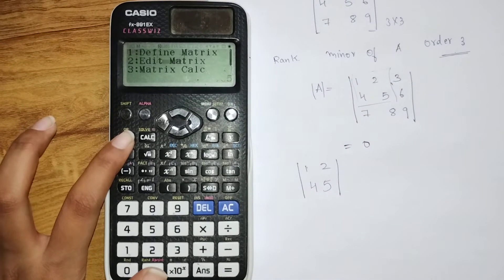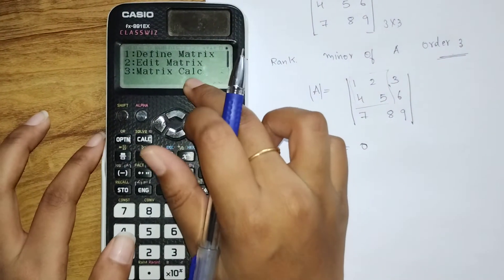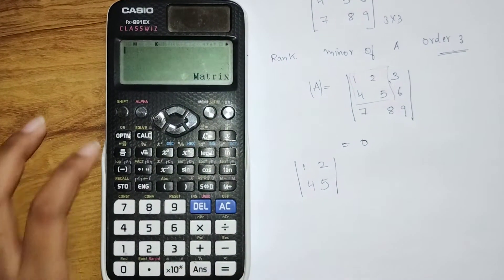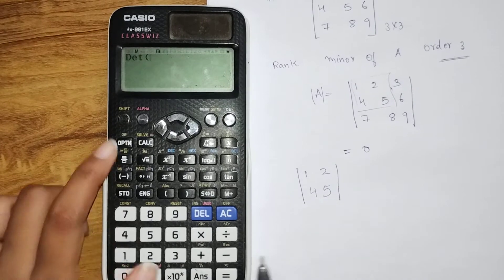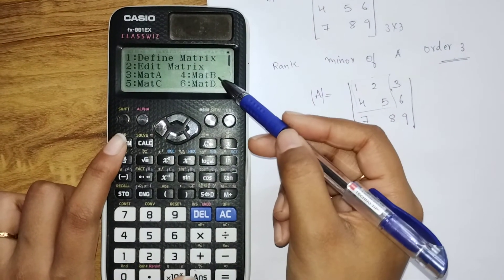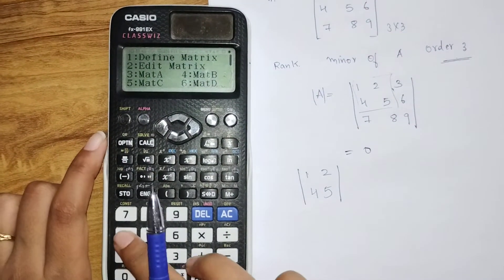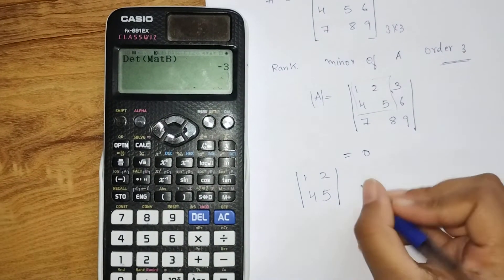The matrix we defined was B. Click on 4. Close the bracket. Equals. So the determinant of the matrix of order 2 by 2 is -3. That means it's non-zero.